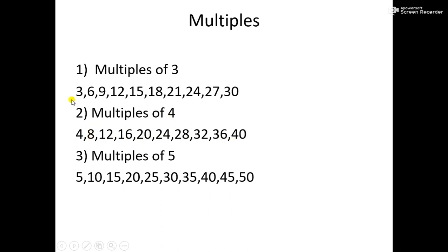These all numbers are multiples of 4. If we talk about multiples of 5, then we will write those numbers which can be divided by 5, or which come in the table of 5: 5, 10, 15, 20, 25, 30, 35, 40, 45, 50. All these are numbers which can be divided by 5, so they are multiples of 5. Likewise, we can write multiples of 6, 7, 8, 9, 10 — any number. We will write only those numbers which can be divided by that number.